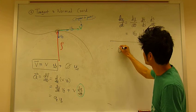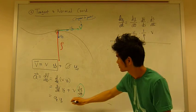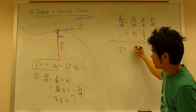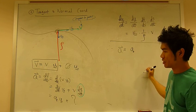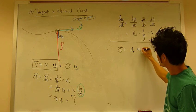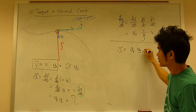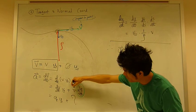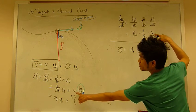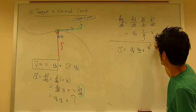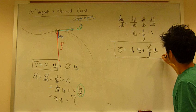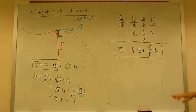So coming back to this, acceleration equals to the tangential component of acceleration in the ut direction, plus this guy right here. But keep in mind that we have this v left over, right? So we have two velocities. So it's v squared divided by rho, and un. So this is the expression for acceleration.